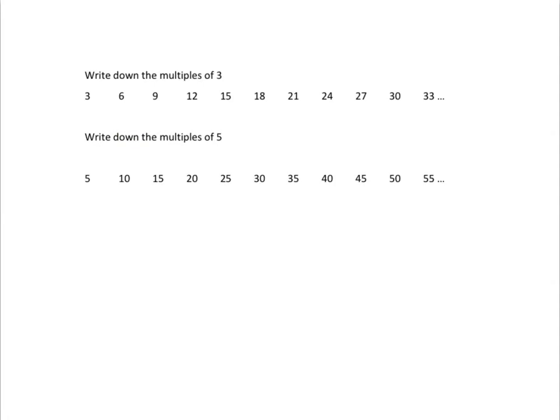The multiples of 3: 3, 6, 9, 12, 15, 18, 21, 24, 27, 30, 33 — and we put three little dots to show it'll go on forever — 36, 39, 42, 45, and we can just keep going. The multiples of 5: 5, 10, 15, 20, 25, 30, 35, 40, 45, 50, 55, and again we put three dots to show we could keep going — 60, 65, and so on.